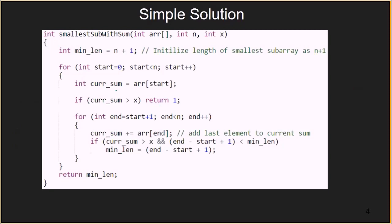Now let's quickly do a code walkthrough before we proceed to the more optimal solution. Here we have the method smallest subarray with sum, which takes as arguments the array, its size, and a value x. We initialize the minimum length as n plus 1 where n is the length of the array. Then we run two nested loops. In the first loop, we initialize current sum as the element at index start. First, we check if that element is greater than x, and if so, we return 1 directly as we have found the smallest subarray containing just one element which is greater than the given value x.